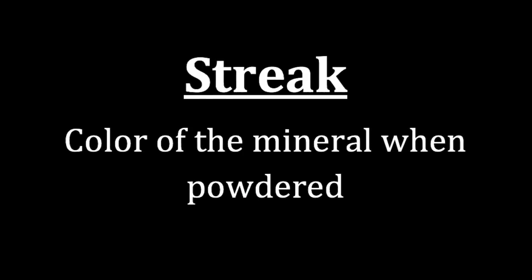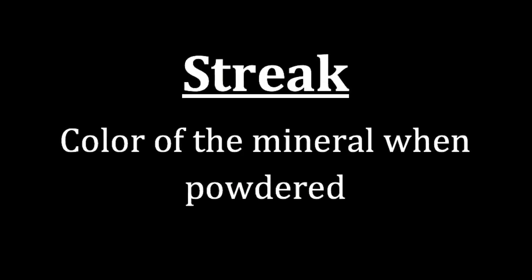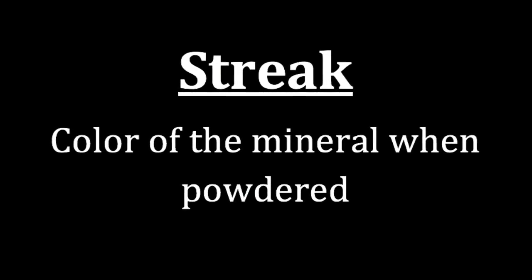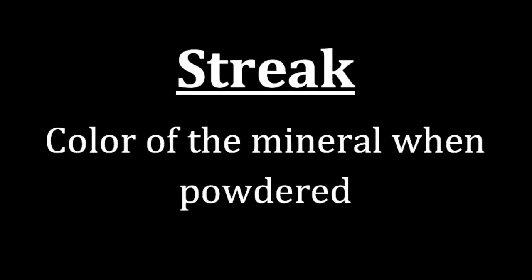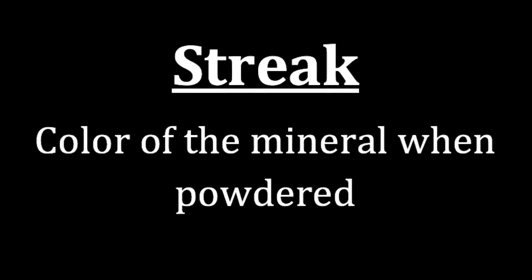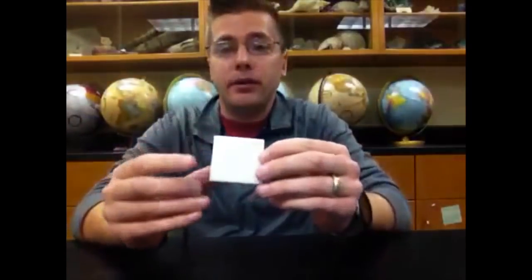The mineral property streak is looking at the color of a mineral when powdered. In order to test the streak, we have to be certain that the hardness of the mineral is less than 6.5, because that is the hardness of the streak plate. If the mineral is harder than the streak plate, we're damaging the plate rather than powdering the mineral and testing its streak.